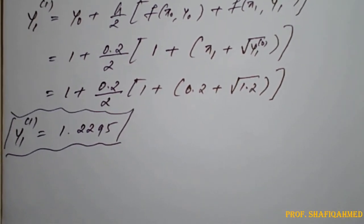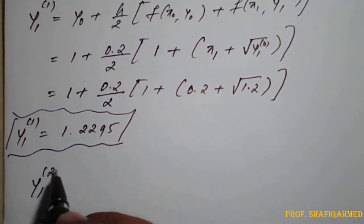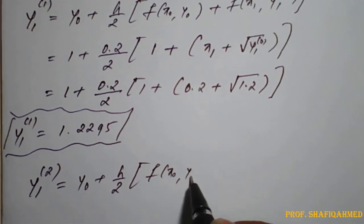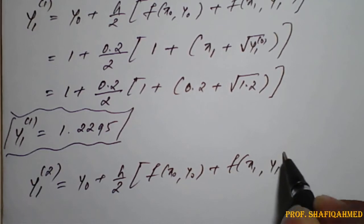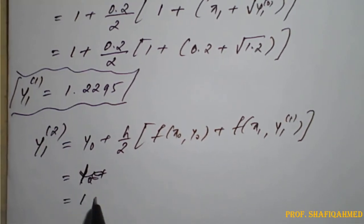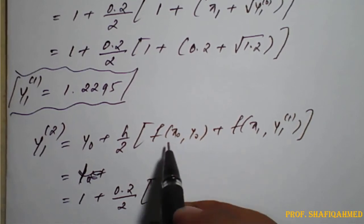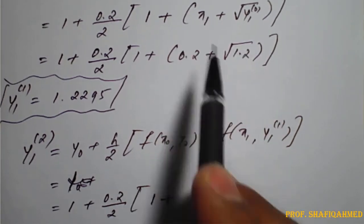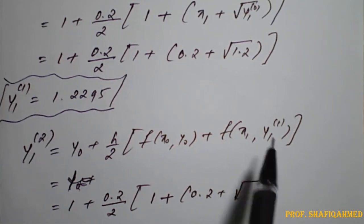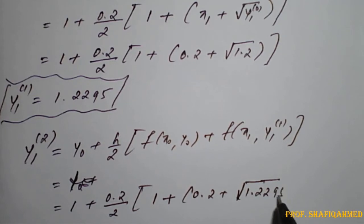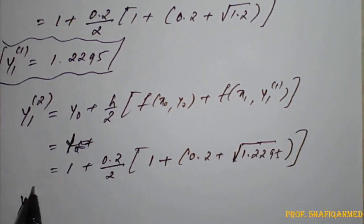Now we compute the next approximation. The second approximation is: y1^(2) = y0 + (h/2) · [f(x0, y0) + f(x1, y1^(1))]. Substituting: 1 + (0.2/2) × [1 + (0.2 + √(y1^(1)))]. Instead of 1.2, we now use the updated value y1^(1) = 1.2295.